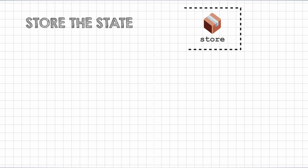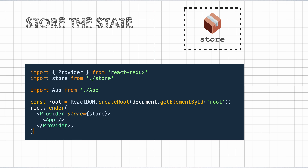Let's begin. Let's see how Redux solves the first problem — storing the state in a single source of truth. Redux uses something called a store to save the state of the entire application. This is how the code looks like. This store is just a JavaScript object that is passed to a Provider, which is a higher-order component that the Redux library exports. The entire app is rendered inside the Provider component. That way, it has access to the entire state of the application in the form of the store.